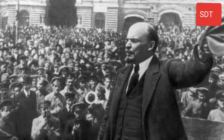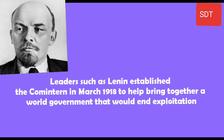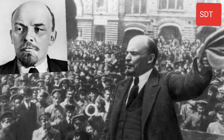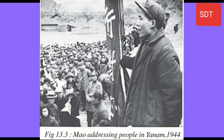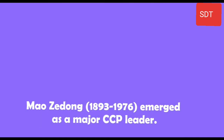Leaders such as Lenin established the Comintern in March 1919 to help bring together a world government that would end exploitation. The Comintern and the Soviet Union supported Communist parties around the world, but they followed the traditional Marxist idea that only the working class in the cities could bring a revolution. Mao Zedong emerged as a major CCP leader.